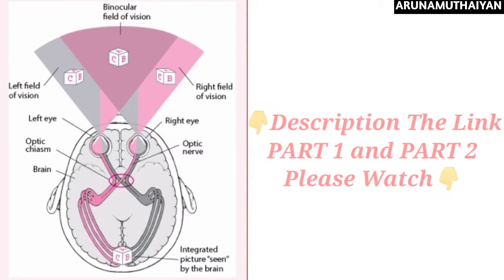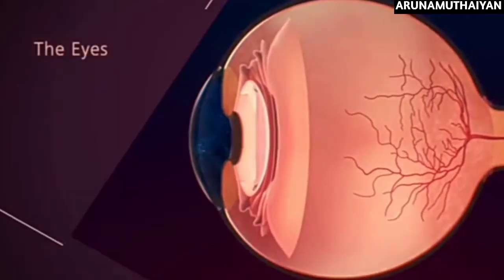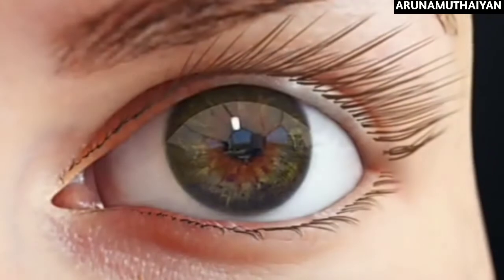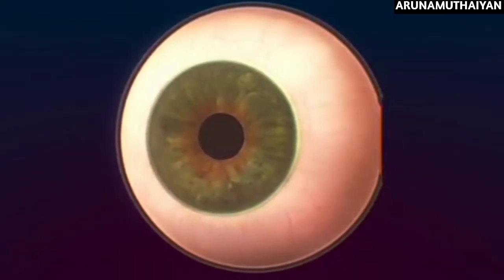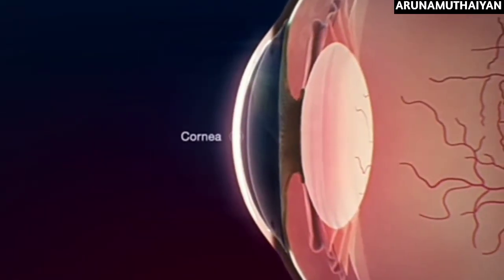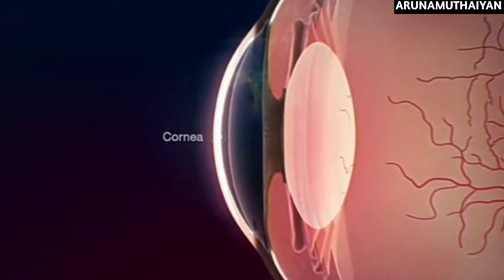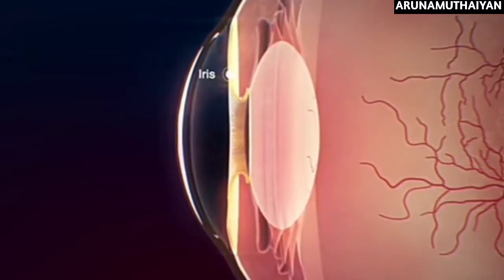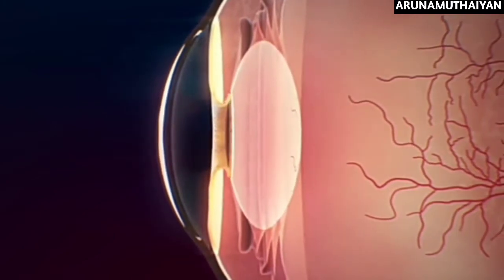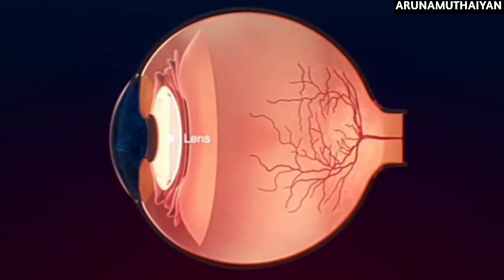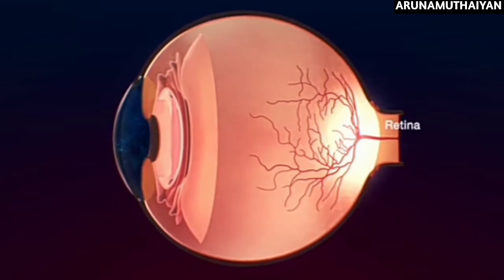The second photoreceptor is the cone. Cones provide color vision in bright light. The cones cannot function in dim light — if the background is dim, cones stop working. In dim light, rod receptors work in our body, while in bright light, cone receptors work.